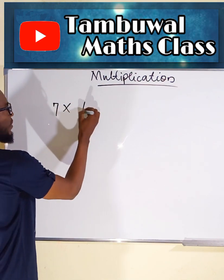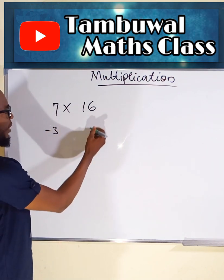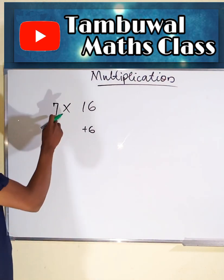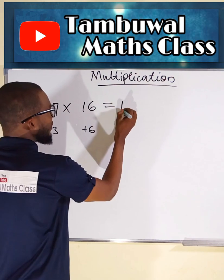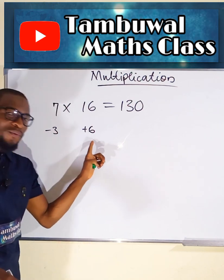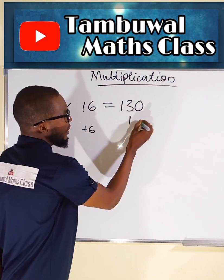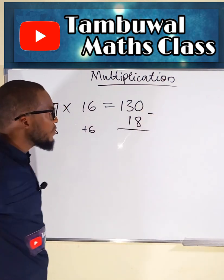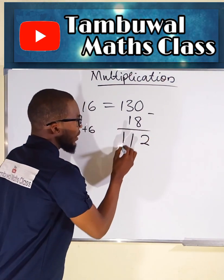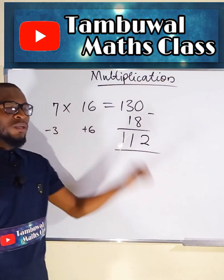Let us try two more. 7 multiplied by 16. 7 is 3 less than 10, while 16 is 6 greater than 10. This plus this, or this plus this, is equal to 13. Add 0. This is negative while this is positive, so 3 times 6 is 18 — negative. So we are subtracting 18 here. We have 112 after multiplying 7 by 16.